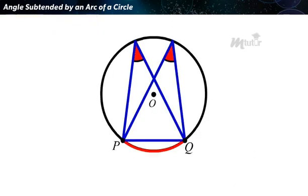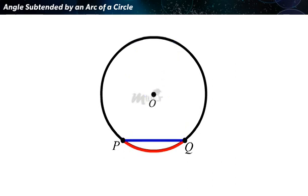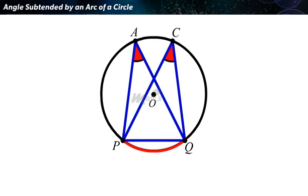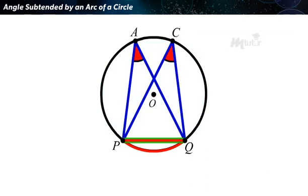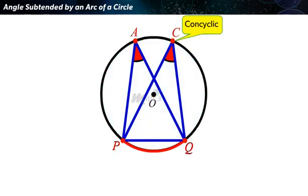How could we relate the angles subtended by an arc in the same segment of a circle? If C and A are points on the same segment of the circle, then angle PAQ equals angle PCQ. Thus, angles in the same segment of a circle are equal. If a line segment joining two points subtends equal angles at two other points lying on the same side of the line containing the line segment, the four points lie on a circle — that is, they are concyclic.